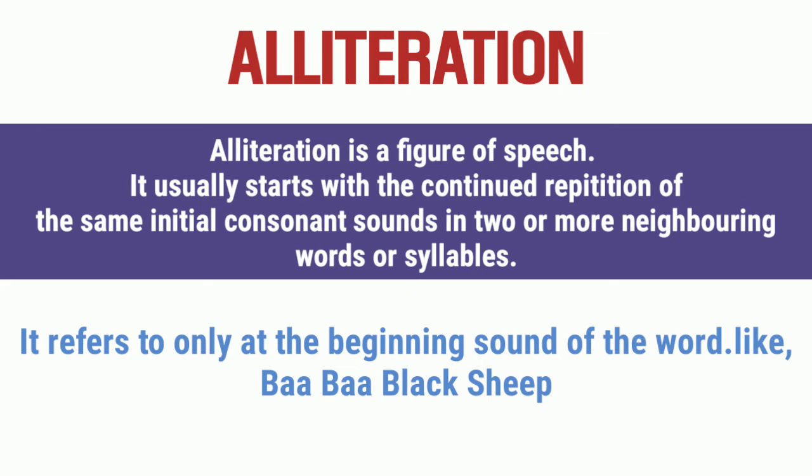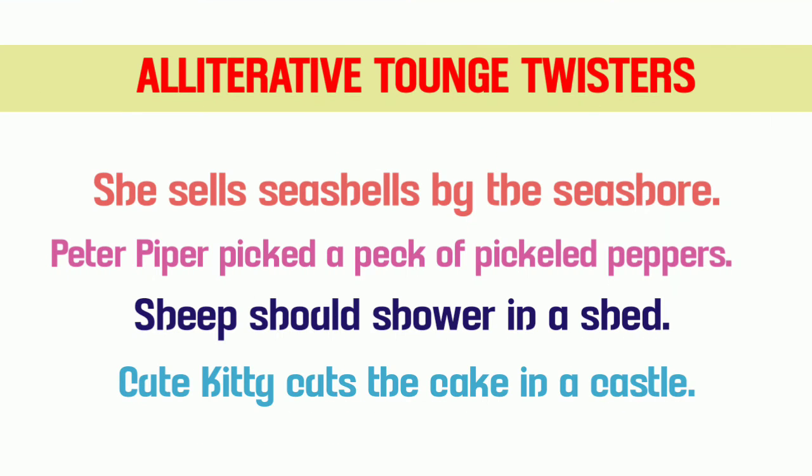Chaliye kuch examples dekhte hain aur kuch alliterative tongue twisters bhi dekhenge, kyunki alliteration tongue twisters bhi hote hain. Pehle example mein dekhein ki sab mein 'yes' ka consonant sound aaya hai. Doosra — 'Peter Piper picked a peck of pickled peppers' — yeh ek bahut famous poem hai. Ismein bhi 'P' consonant sound aaya. Aise alliteration se bane sentences ko tongue twister bhi kehte hain.